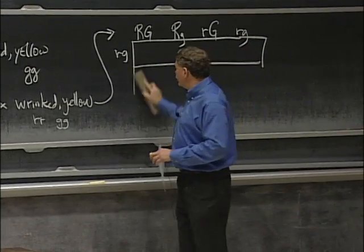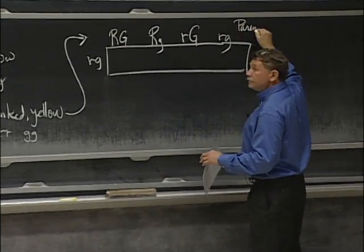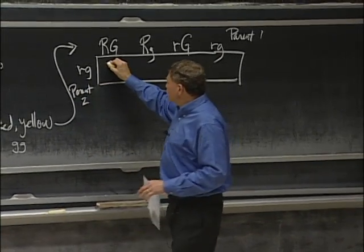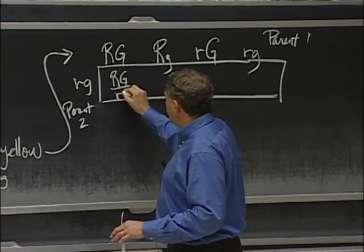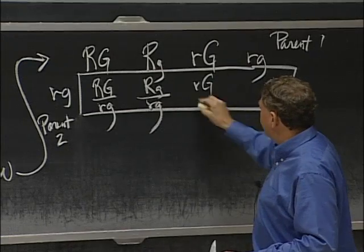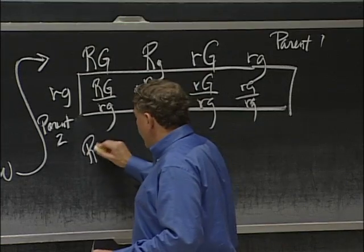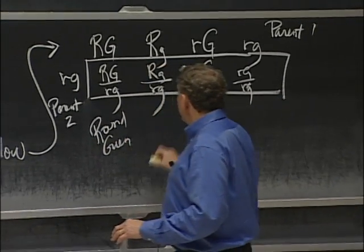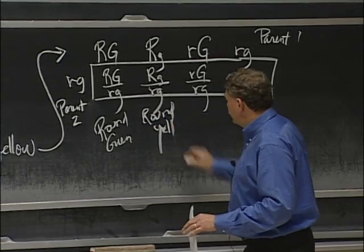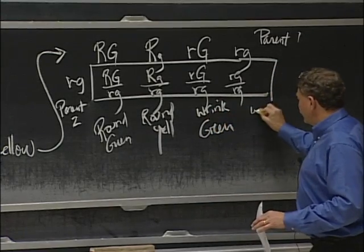So that's what our little Punnett square looks like. Parent number one, parent number two. The results will be: big R, big G over little r, little g — round and green; big R, little g over little r, little g — round and yellow; little r, big G over little r, little g — wrinkled and green; and little r, little g over little r, little g — wrinkled and yellow.